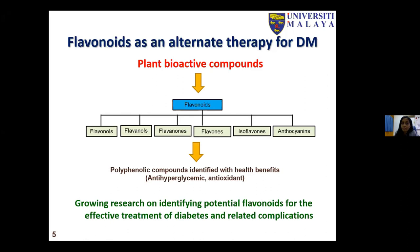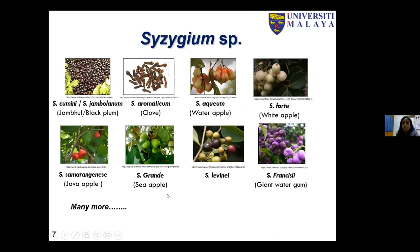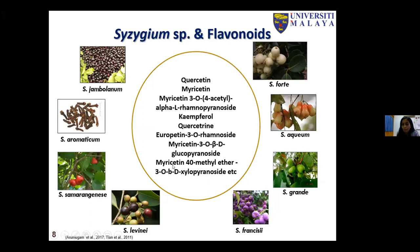Moving to the focus on Syzygium species, which has been recently identified as a potential alternate therapy for diabetes — it falls under the family Myrtaceae, with almost 1,200 species identified to date and many flowering tropical plants under this genus. The highest diversity has been identified from Malaysia to northeastern Australia. The major plant bioactive components identified in most plants under this genus are flavonoids, including quercetin, myricetin, and various myricetin derivatives. Notably, myricetin-3-O-rhamnoside has been identified as the chemosystemic indicator of the species.